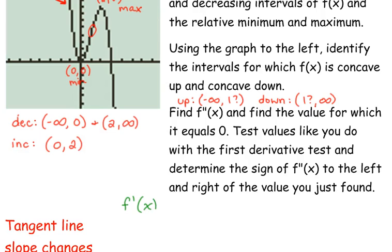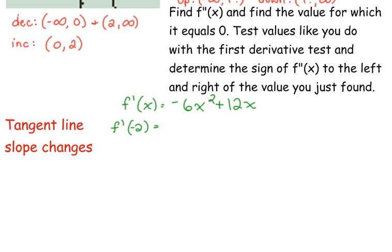F prime of x is negative 6x squared plus 12x. What is the slope of the tangent line at negative 2? Negative 2 squared is 4, that's negative 24, minus 24, that's negative 48. That is a very, very steep line.